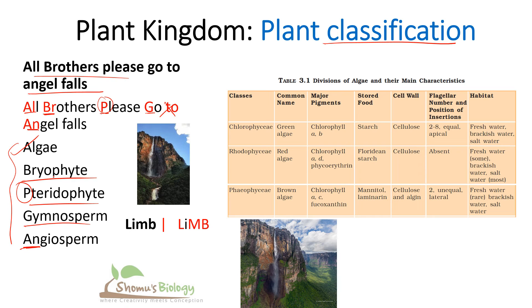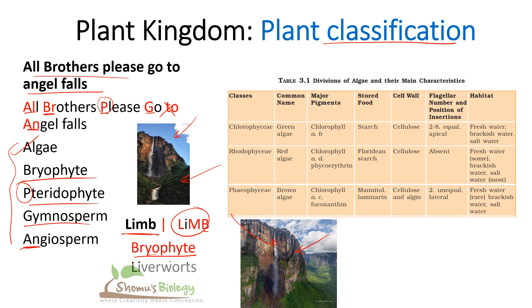Remember the sentence 'All brothers please go to Angel Falls' — Angel Falls is a beautiful natural place. For bryophyte examples, use the word 'LIMB': L-I-M-B. B stands for bryophyte, LI stands for liverworts, and M stands for moss. So the examples of bryophytes are liverworts and moss, easily remembered with the word 'limb' as it's attached to our body.